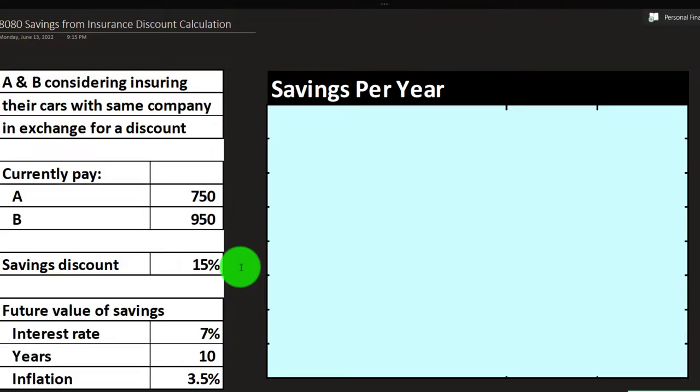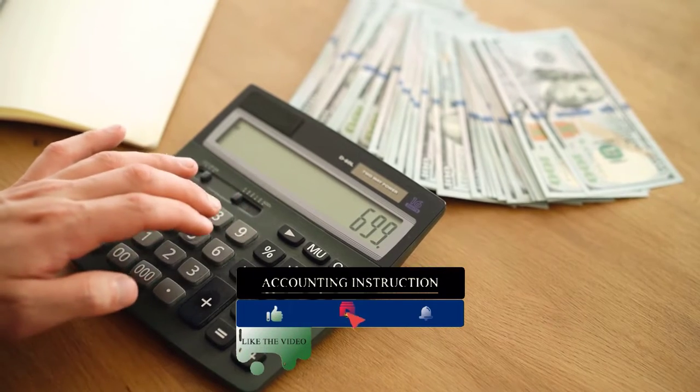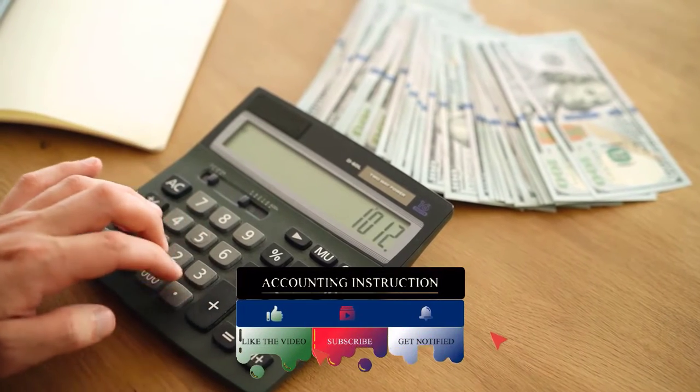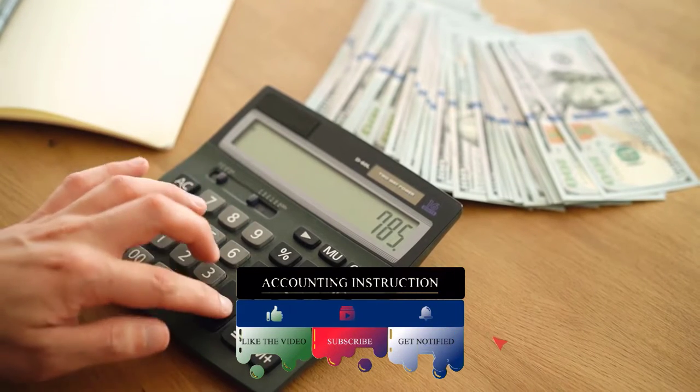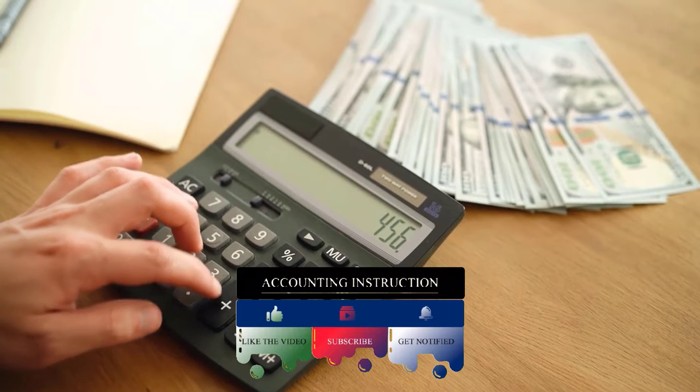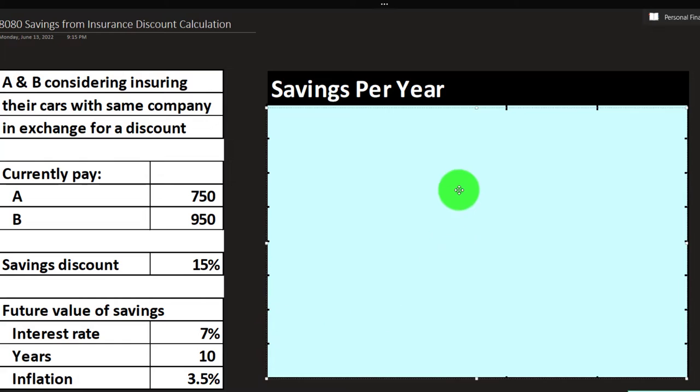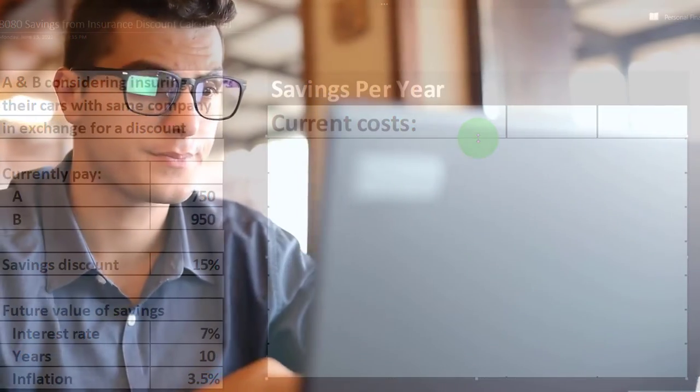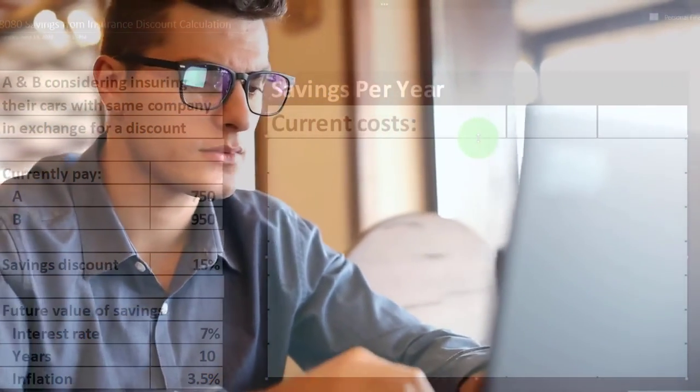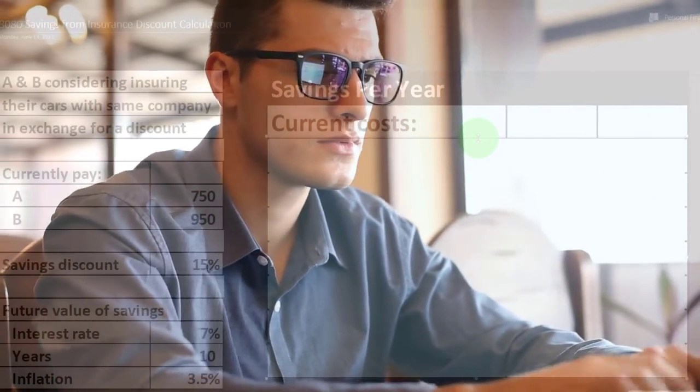The discount we're going to say is a 15% discount. So first we want to do our discount calculation and then we're going to use that discount calculation to think about what the savings would be over a period of time. So we'll use our present value calculations using the interest rate 7%, 10 years and inflation 3.5.